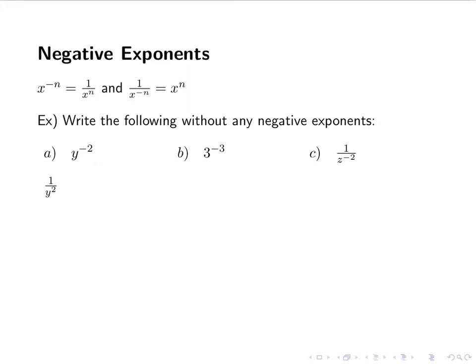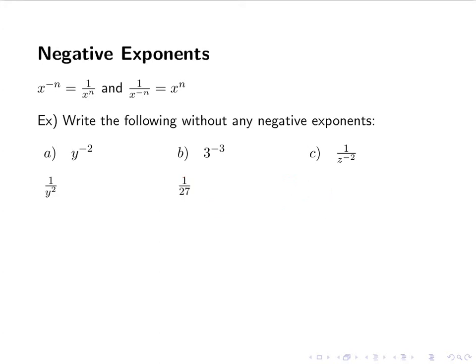3 to the negative 3 would be 1 over 3 cubed, but we know what 3 cubed is — 27. So 1 over 27.